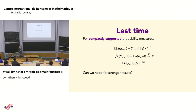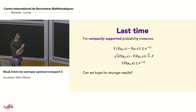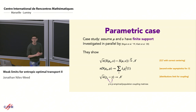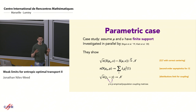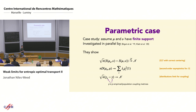So that's the Sinkhorn divergence. A consequence of the first result is that this divergence also shrinks at rate n to the negative one-half. I previewed yesterday that I want some strengthenings of these results. To get insight, let's examine the parametric case — the setting investigated simultaneously by Bigo et al. and Klatt et al. in 2019–2020. Here the measures mu and nu are assumed to have finite fixed support, with a number of support points not growing with n. This is entirely a parametric problem because a coupling between two finitely supported measures is just a matrix.